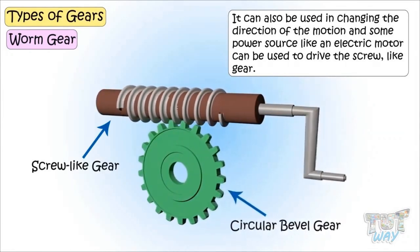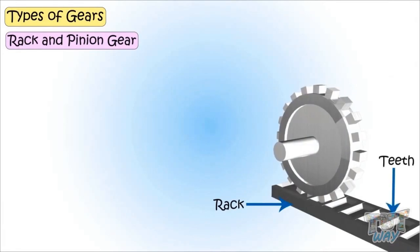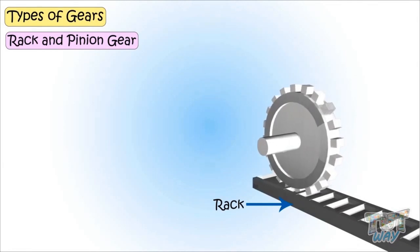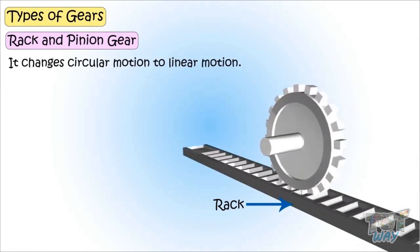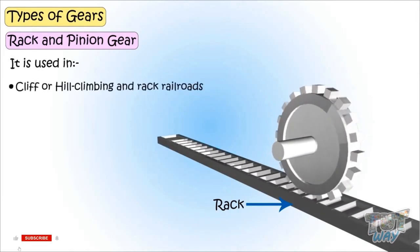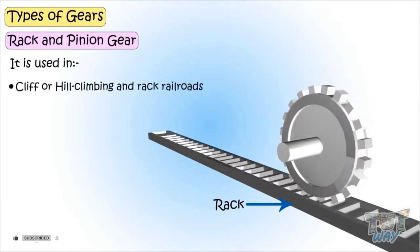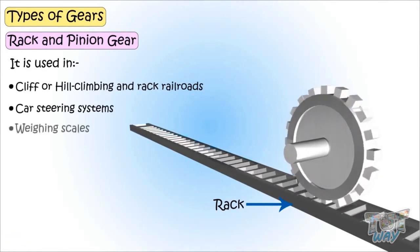Next, we have rack and pinion gear. Here, the rack is a straight bar with teeth on it, and another gear meshes with it. It changes circular motion to linear motion. It is used in cliff and hill climbing rack railroads, car steering systems, weighing scales, and many more types of machines.